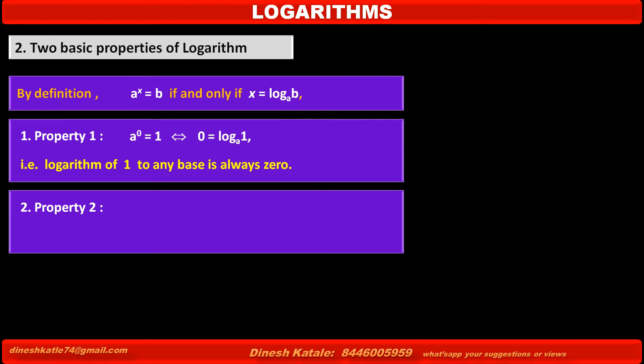Now see property 2. Consider the statement in exponential form: a raised to 1 equals a. According to our indices rule, we know with power 1 the answer is the number itself. So a raised to 1 equals a, which implies by converting it to logarithmic form: 1 equals log of a to the base a.